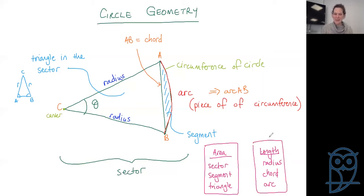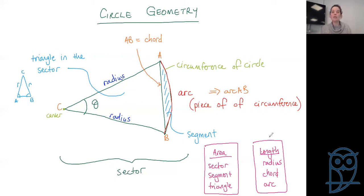Now those might sound basic. The common errors that people make is saying the area of an arc — you can't do that. An arc is a line; it doesn't have an area. It's the area of a segment, it's the length of an arc. When you start making mistakes like this, it's saying that you don't understand what a segment is or what an arc is. You've got to communicate properly using correct terminology. Areas are sectors, segments, and triangles. Lengths are radius, chord, and arc.